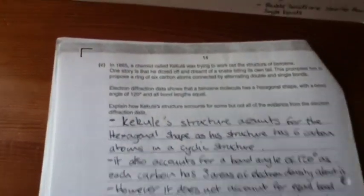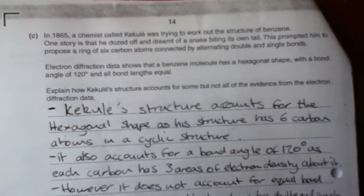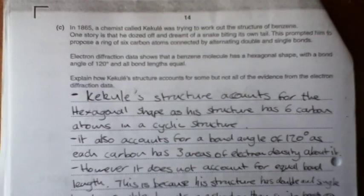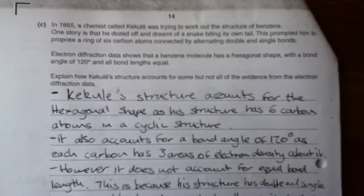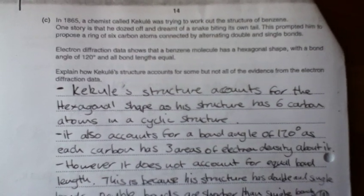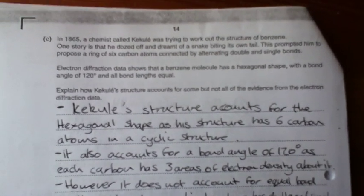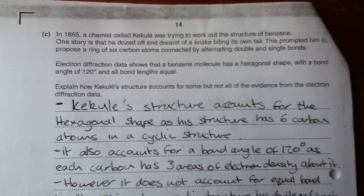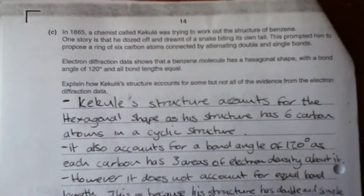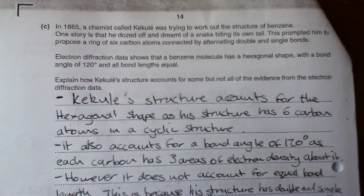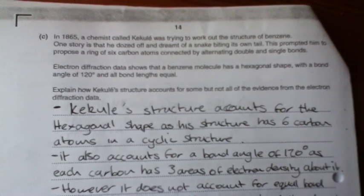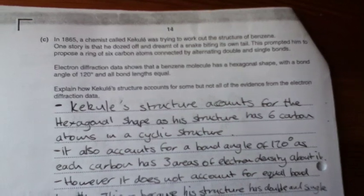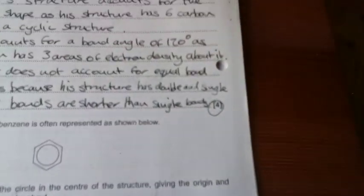Here's a past paper question which comes up time and time again. Electron diffraction data shows that a benzene molecule has a hexagonal shape, with a bond angle of 120 degrees, and that all of the bond lengths are equal. The question asks you to explain how the structure that Kekule proposed accounts for some of the evidence, but not all of the electron diffraction data. First of all, look at the amount of marks that it's asking for.